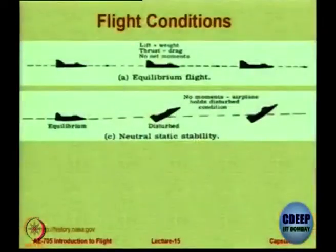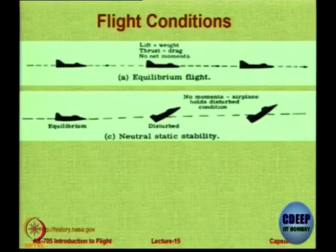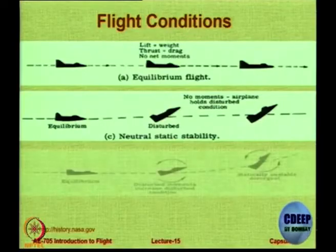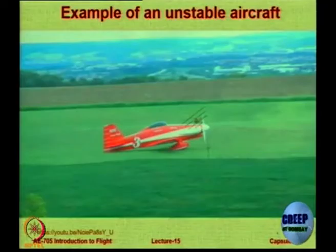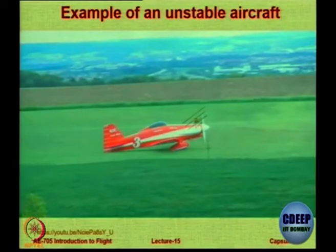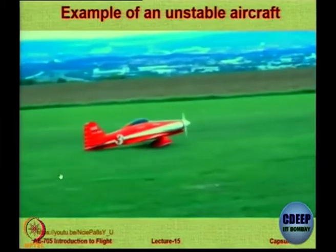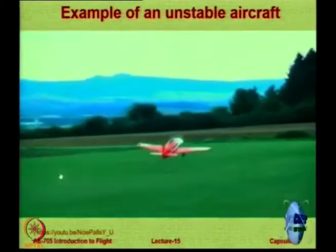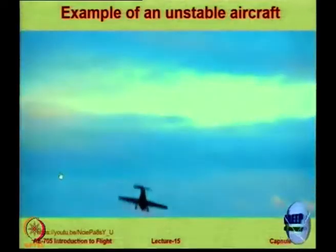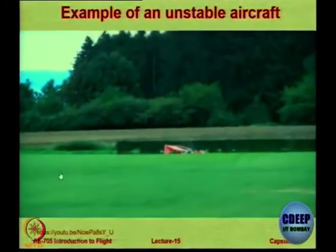In neutral flight, you disturb the aircraft and it remains disturbed. In unstable flight, it departs completely. Here is a small video clip showing the behavior of an unstable aircraft. This is a remotely controlled aircraft — it takes off, goes into nose-up, some disturbance comes, and it is gone.